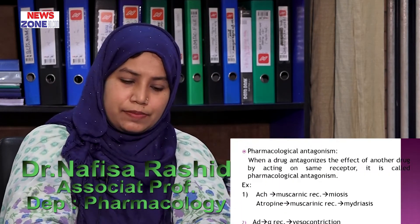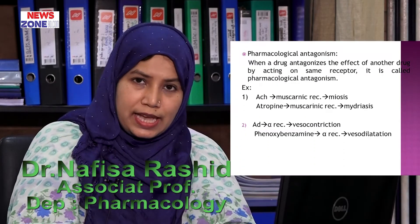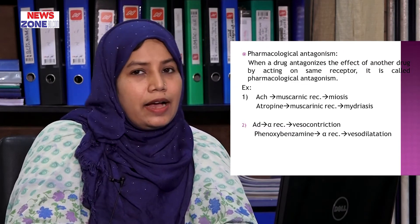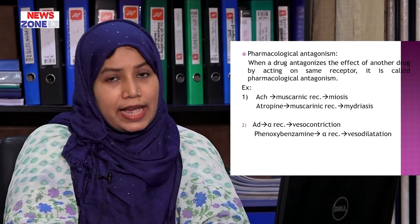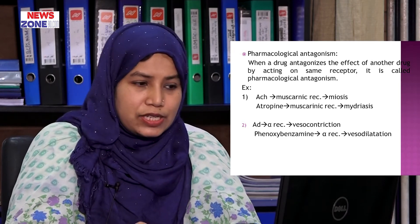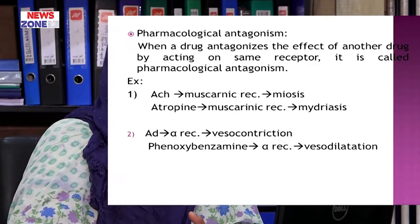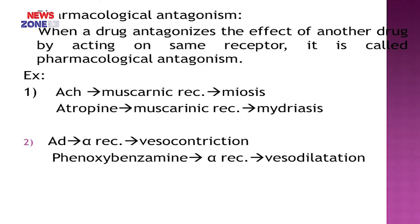Now, pharmacological antagonism. The difference from physiological antagonism is that pharmacological antagonists act on the same receptor. The definition: when a drug antagonizes the effect of another drug by acting on the same receptor, it is called pharmacological antagonism. For example, acetylcholine causes miosis in our eye, while atropine causes mydriasis. They act on the same receptor — the muscarinic receptor — and thus represent pharmacological antagonism.